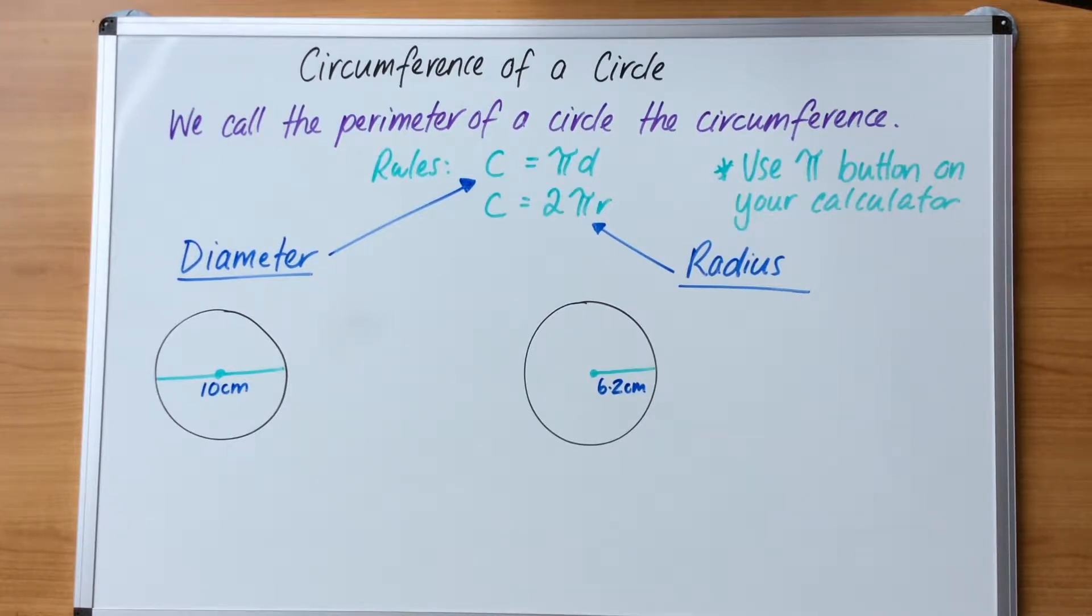In this video we are focusing on circumference of a circle. We call the perimeter of a circle the circumference. There are two rules that you need to know. The first one is appropriate to the diameter.